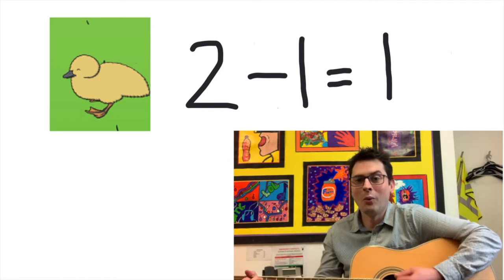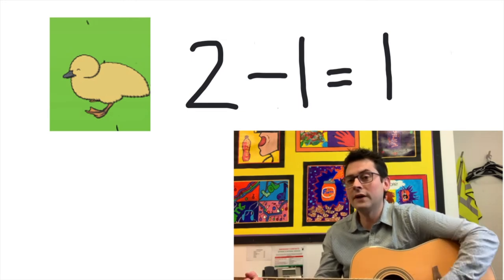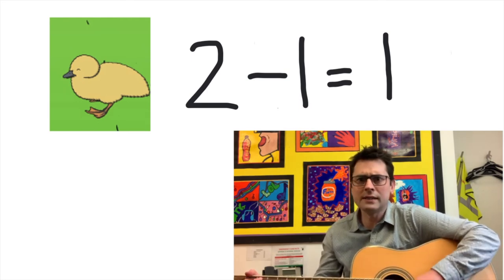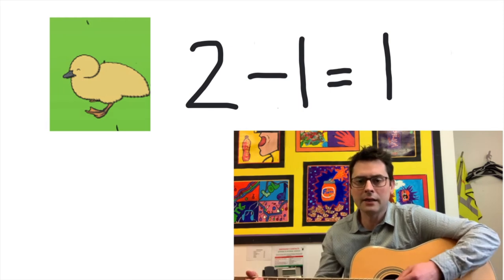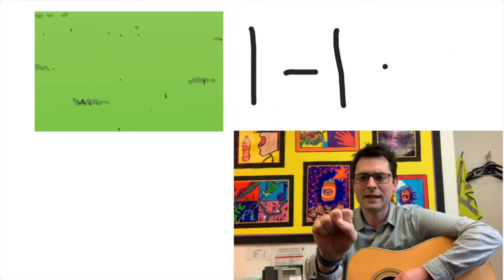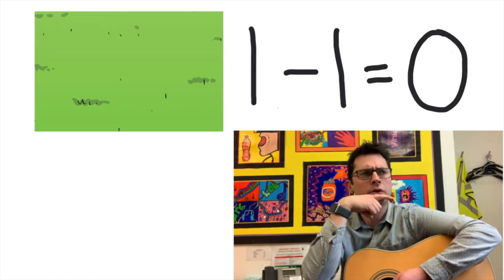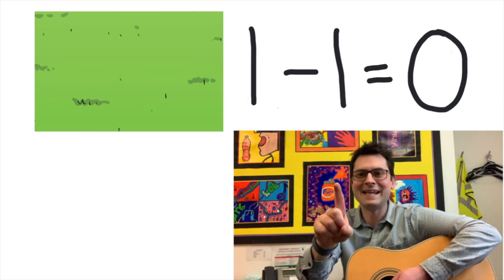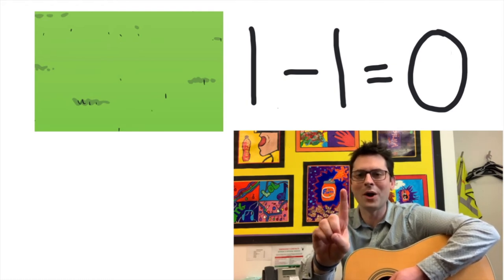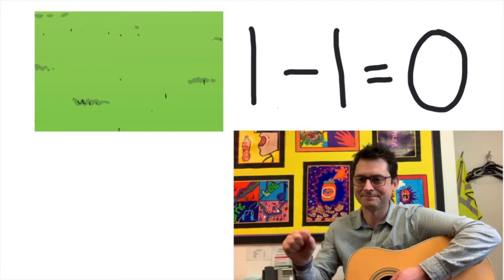Well done, working hard everyone. One little duck went swimming one day, over the hills and far away. Mama duck said whack, whack, whack, whack. But no little ducks came swimming back. One little duck went swimming and now there's one less, one fewer. One less than one is zero. One fewer than one is zero.